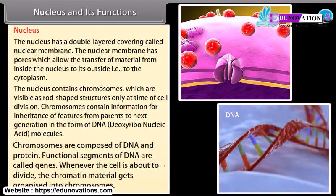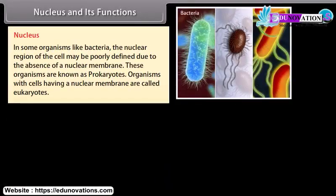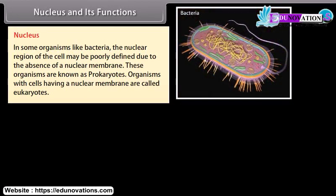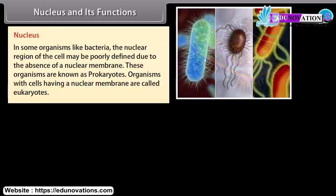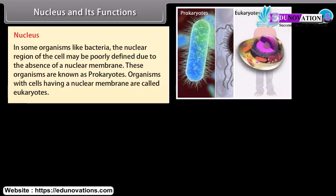Inheritance information is stored in the form of DNA — deoxyribonucleic acid molecules. Chromosomes are composed of DNA and protein. Functional segments of DNA are called genes. Whenever the cell is about to divide, the chromatin material gets organized into chromosomes. In some organisms like bacteria, the nuclear region may be poorly defined due to the absence of a nuclear membrane — these organisms are known as prokaryotes. Organisms with cells having a nuclear membrane are called eukaryotes.